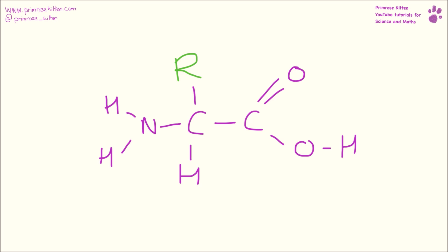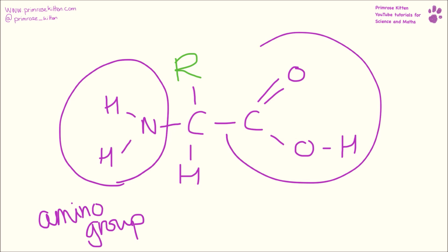This is our basic structure of an amino acid. Now over this side we have our amino group, and over this side we have our carboxylic acid group. Now this R here can refer to anything, so loads and loads of different things can be put in there.